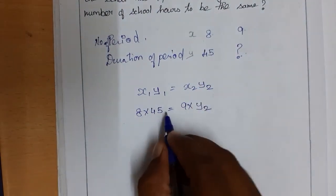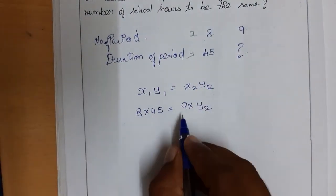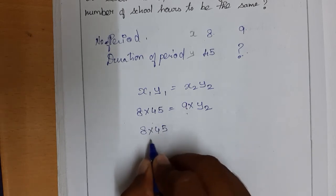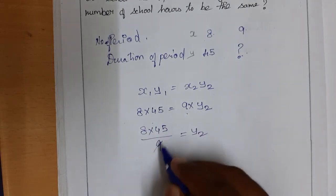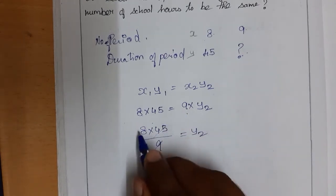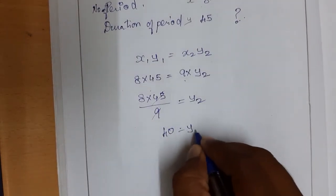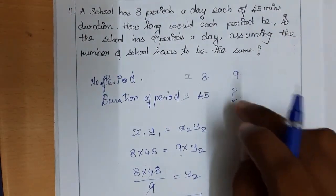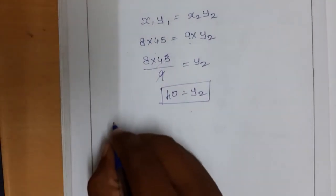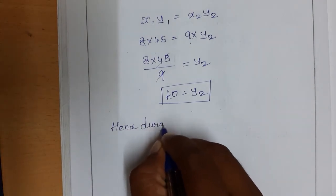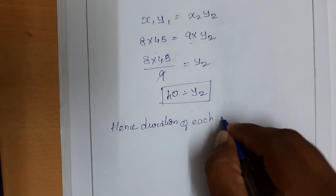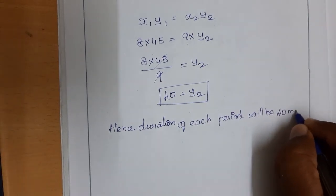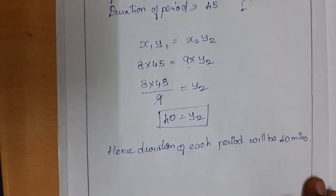So Y2 = (8 × 45) ÷ 9. We can cancel: 45 ÷ 9 = 5, then 5 × 8 = 40. Therefore Y2 = 40. Hence, the duration of each period will be 40 minutes. Remember the unit is important for the final answer.